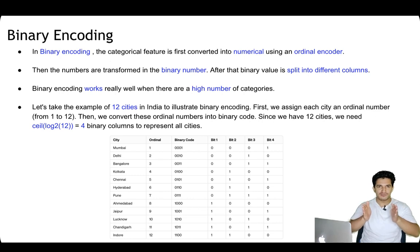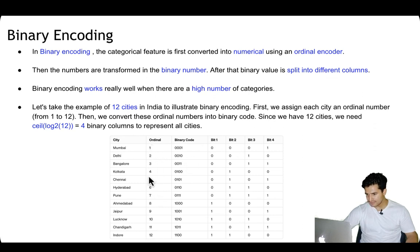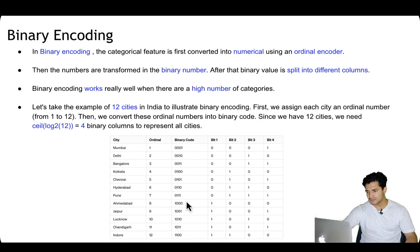Next is binary encoding, which is a combination of label encoding and one-hot encoding, using both to reduce the number of columns. First, the categorical variable is converted to numbers using ordinal encoding — so for 12 cities we give them numbers 1 to 12. Then each number is transformed into its binary representation and split into different columns. For example, 1 in binary is 0001, 2 is 0010, 3 is 0011, and so on.